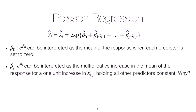The question is how we can interpret the parameters of this model — the interpretation for the parameters versus the estimates will be the same. Starting with the intercept term: e raised to beta_0 can be interpreted as the mean of the response when each predictor is set to zero. If all x values are set to zero, then e raised to beta_0 is simply the mean of the response when all predictors equal zero.